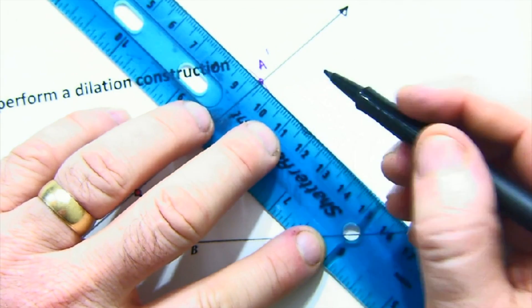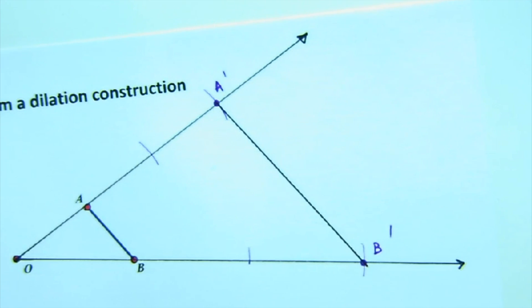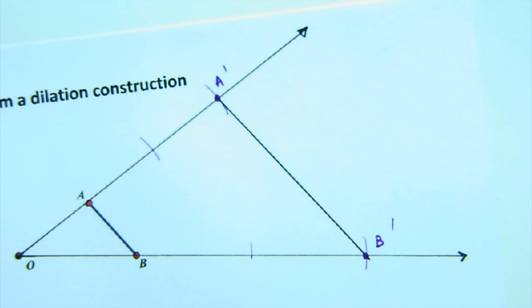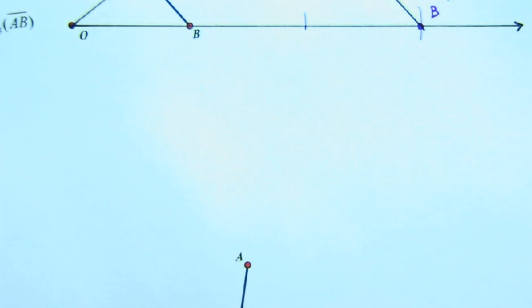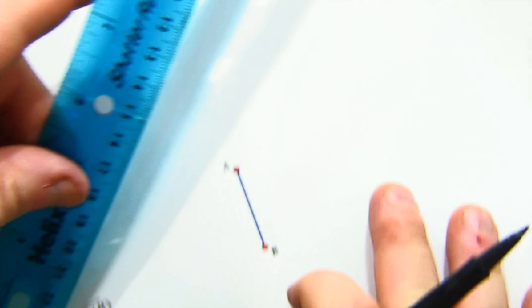As expected, we are parallel and we are three times the size. Now dilating by a fractional value is always a little more tricky.